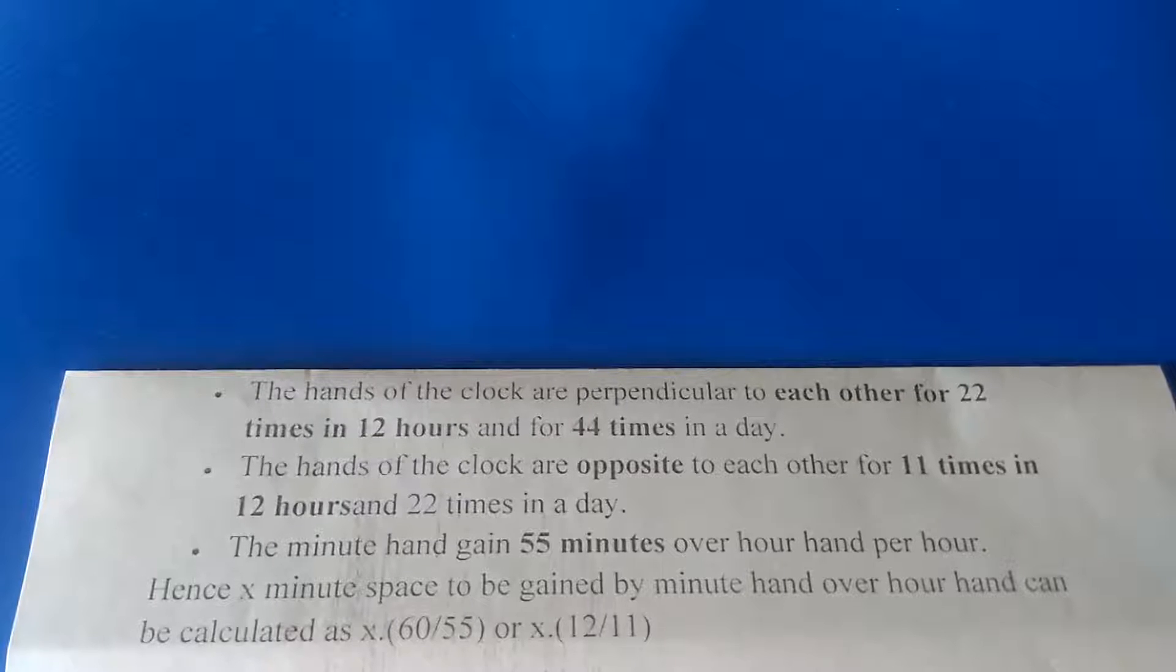In 12 hours, the hands of a clock are opposite to each other for 11 times, and 22 times in a day. Between 5 and 7, both hands are opposite to each other once.